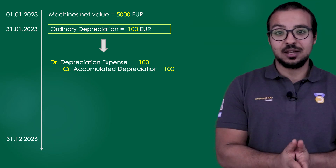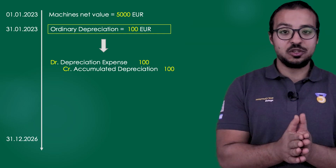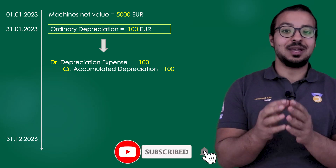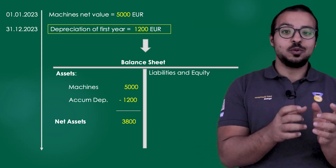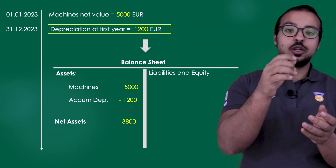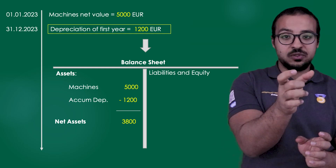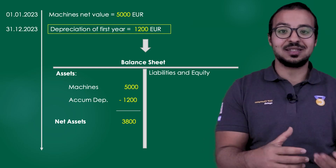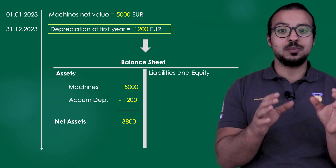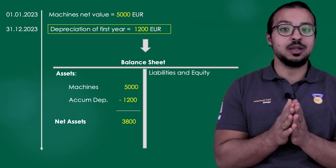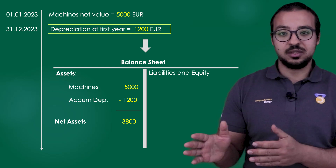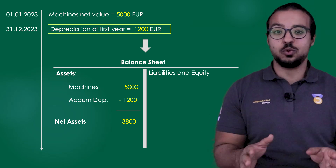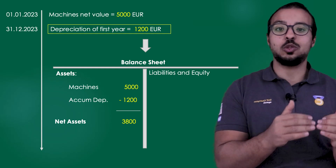We use an accumulated depreciation account rather than posting credits directly to the fixed asset itself. The value of the fixed asset acquisition on our balance sheet always remains the same and is not impacted by the depreciation expense. Instead, we post depreciation against accumulated depreciation, which appears in the balance sheet under assets below the fixed assets value — with the fixed asset as a positive and accumulated depreciation as a negative, giving a net value. The acquisition cost is never impacted by ordinary depreciation; extraordinary depreciation is a separate matter.